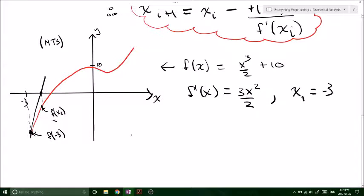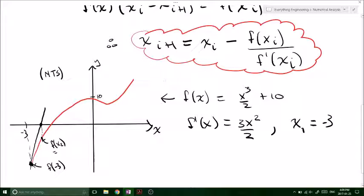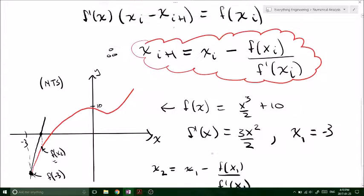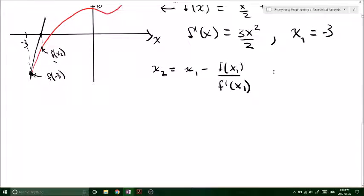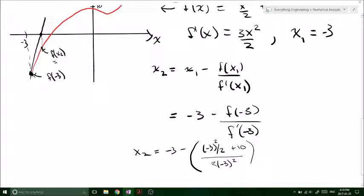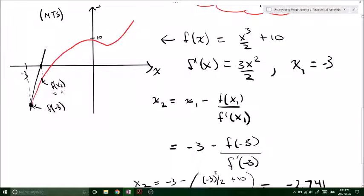Using the formula that we found above, we have x2 equal to x1 minus... This is the Newton-Raphson formula that we just derived. And we're going to calculate our x2. And this will give us minus 2.741. Which is closer to what the actual root is.